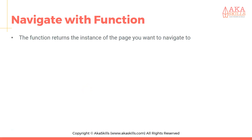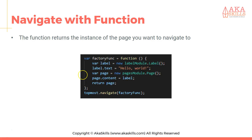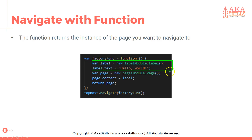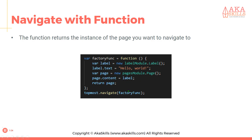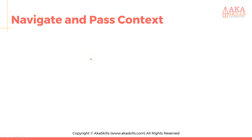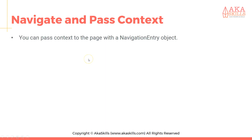You can navigate with a function as well, where the function returns the instance of the page you want to navigate to. I'm defining var factoryFunc, which is a function inside which I define my label and my page, set its content, and return it. Then I call topmost.navigate() and provide the factory function.